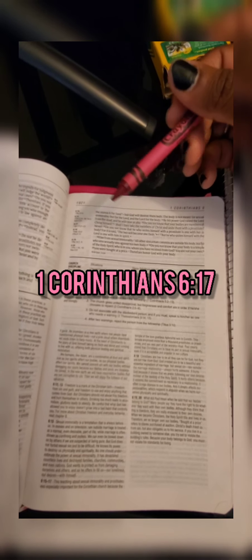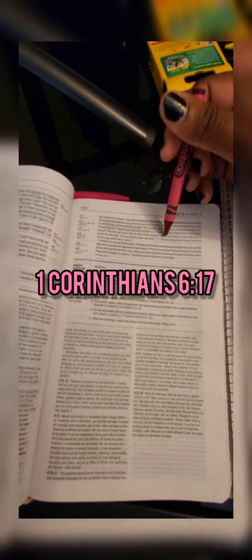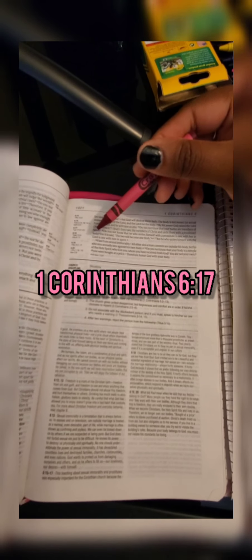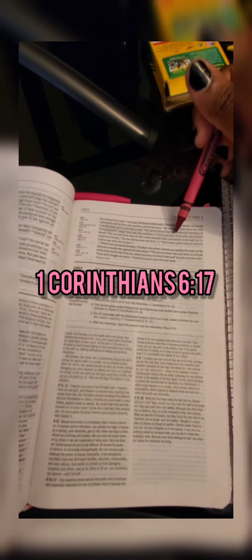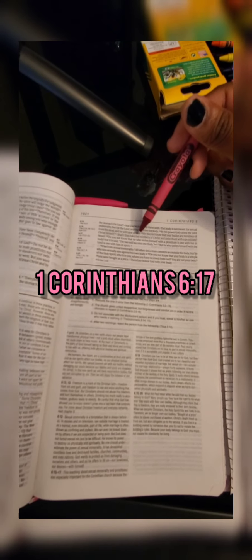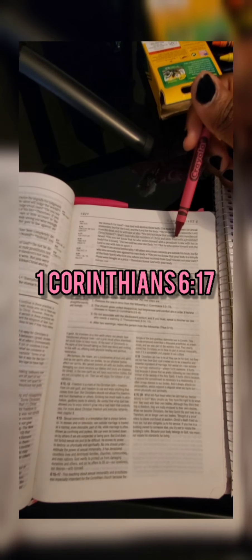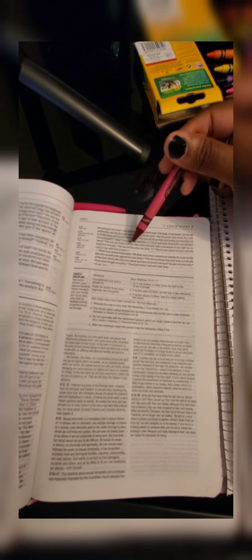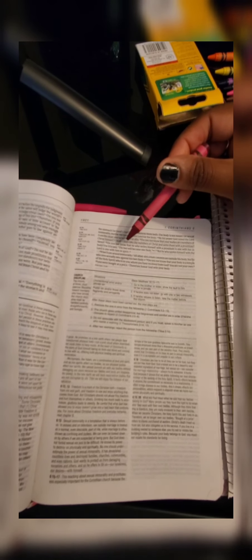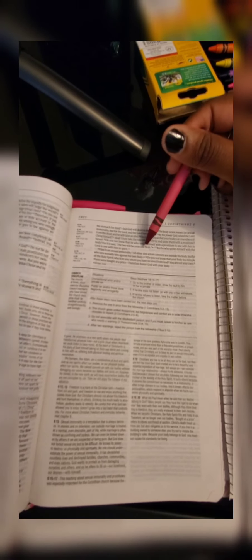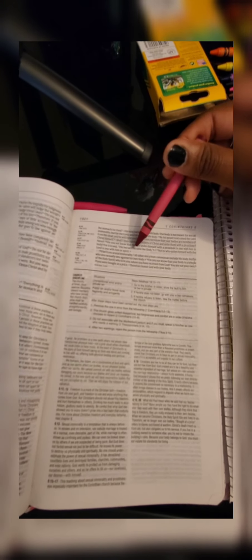Here's my visual representation of First Corinthians chapter 6 verse 17: 'But he who unites himself with the Lord is one with him in spirit.' A few verses before that, it's talking about when you unite the members of Christ with a prostitute. It says, 'Do you not know that he who unites himself with the prostitute is one with her in body? For it is said, the two shall become one flesh,' kind of going back to the Genesis reference for Adam and Eve. So in this visual representation...